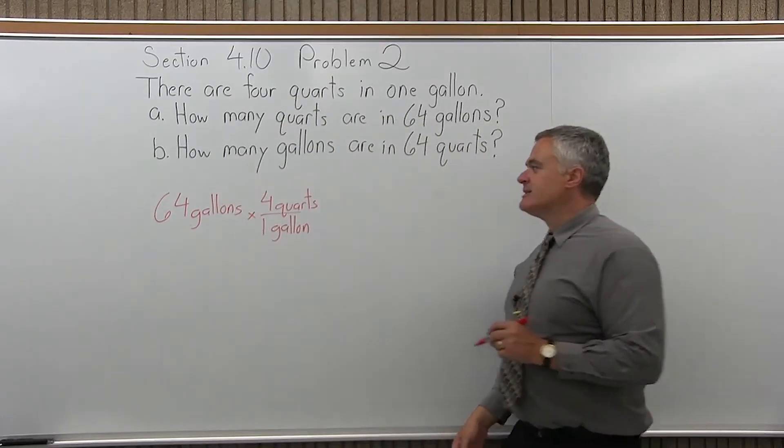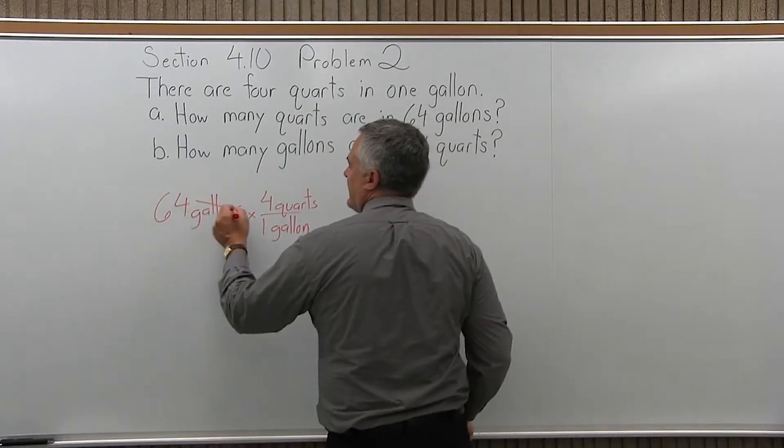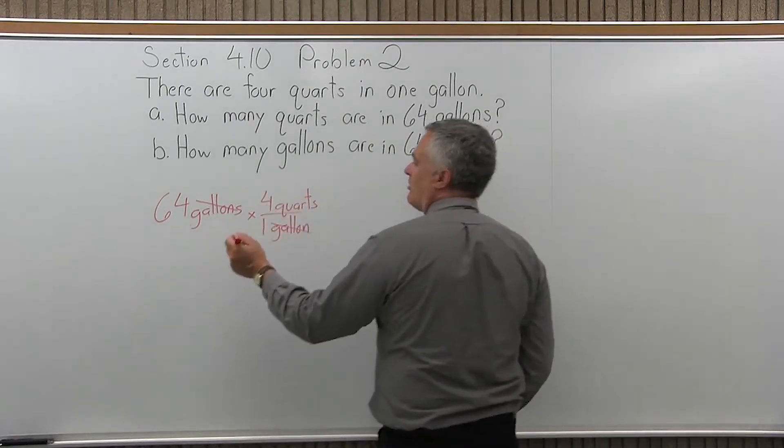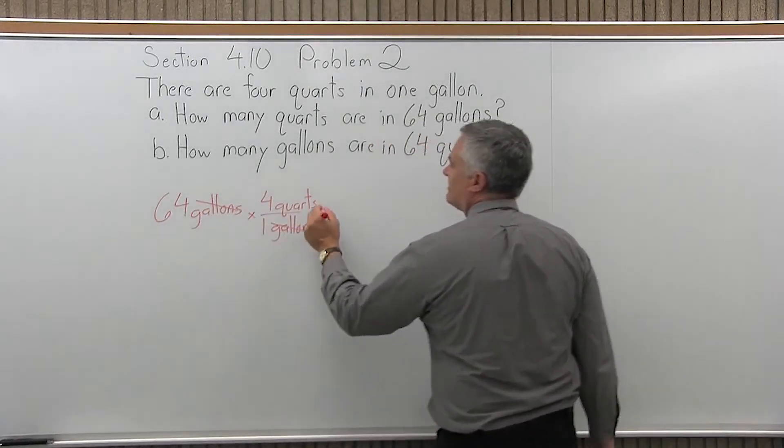So now as I multiply this, the units gallons will cancel with the unit gallon in the denominator. One in the top, one in the bottom. So I have 64 times 4, and the units of measure will be quarts.